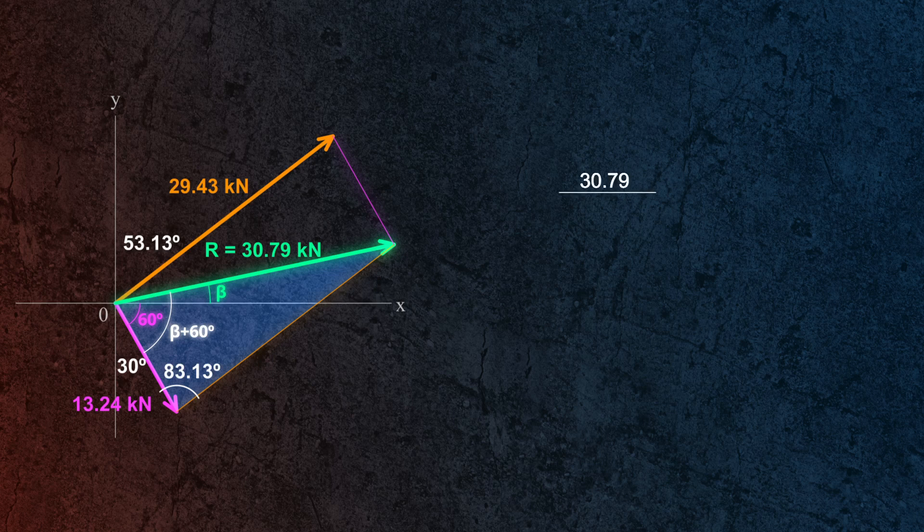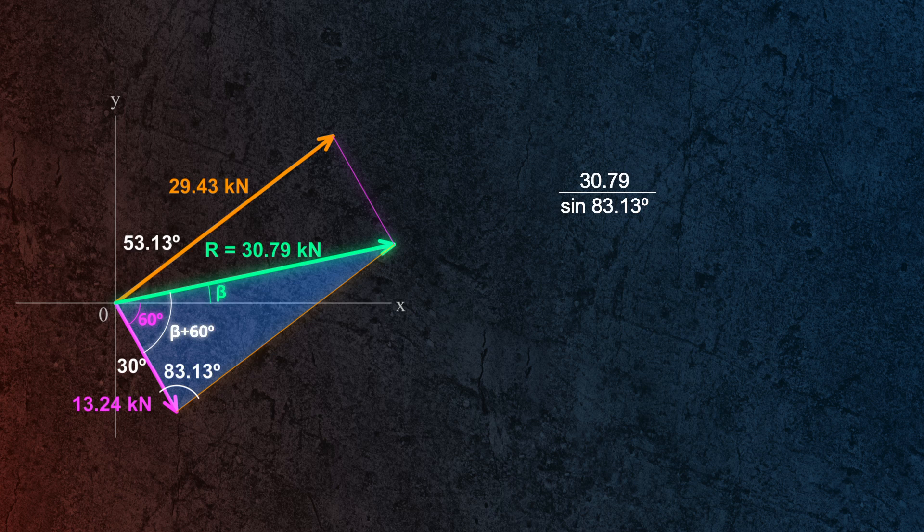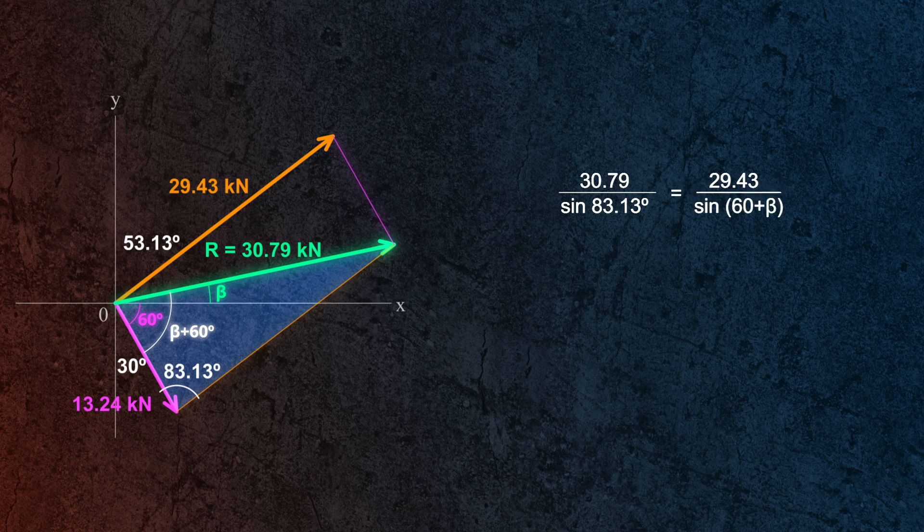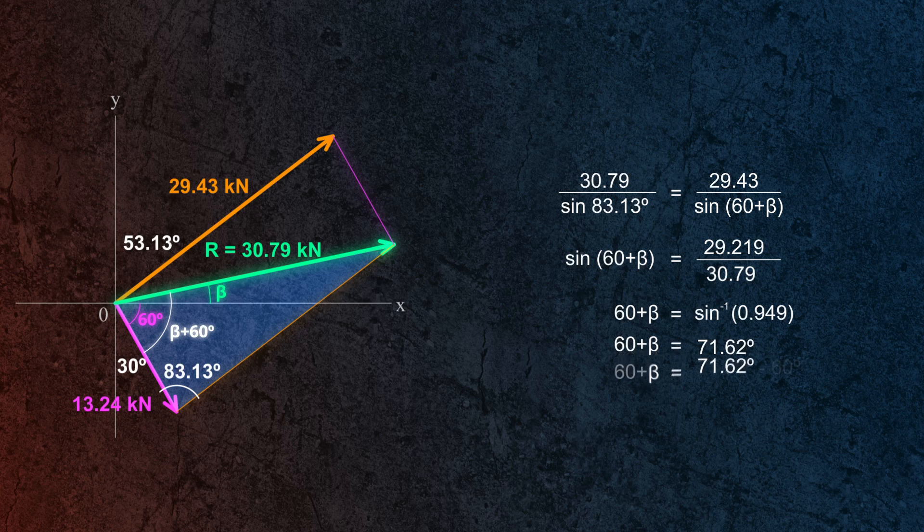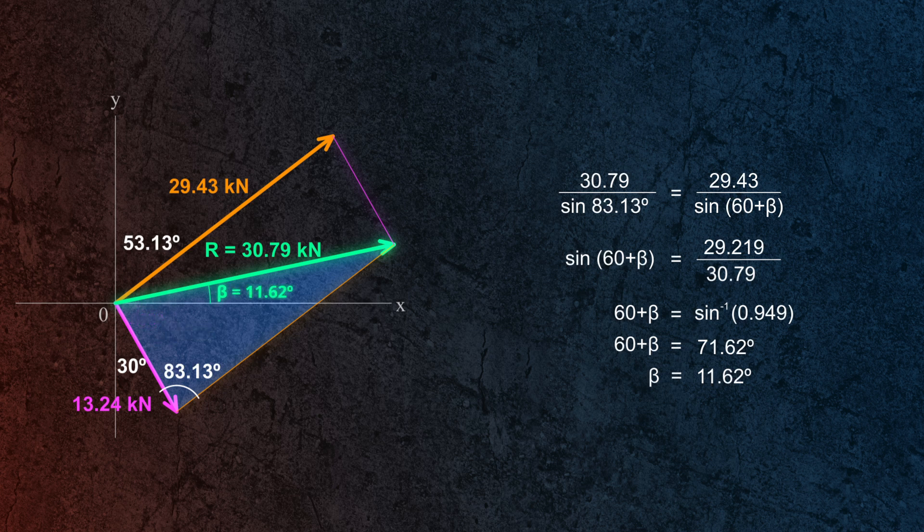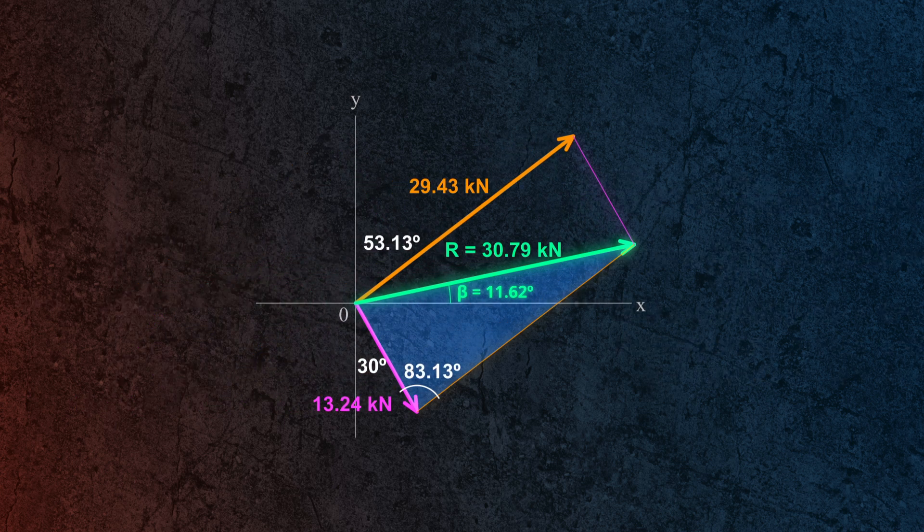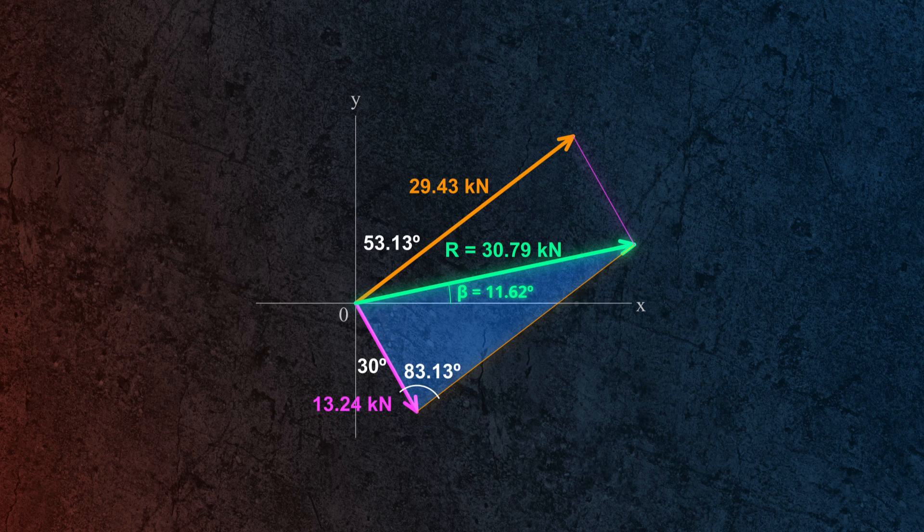That will be R divided by the sine of opposite angle, 83.13 degrees, is equal to 29.43 divided by the sine of its opposite angle, 60 plus beta. And solving for beta, we will get 11.62 degrees. So the resultant of the given forces is 30.79 kN at 11.62 degrees from the x-axis.